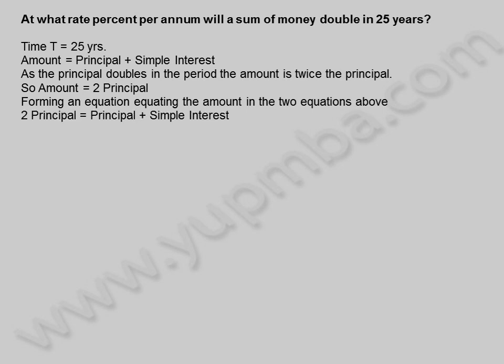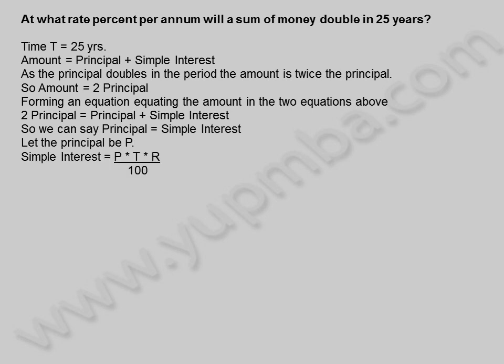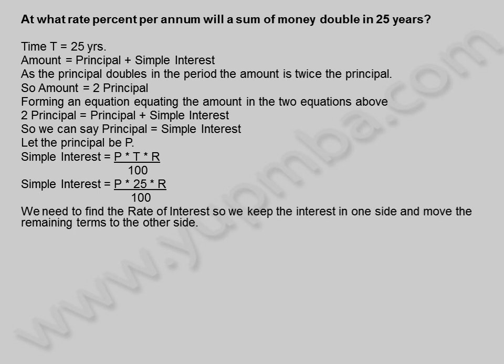Forming an equation: 2P equals P plus simple interest, so principle is equal to simple interest. Let the principle be P. Simple interest is equal to principle into time into rate percent divided by 100, giving SI equals principle into 25 into rate percent divided by 100. We need to find the rate of interest, so we keep the interest on one side and move the remaining terms to the other side.